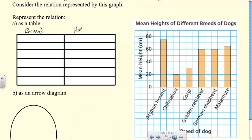And height here, because our association is an Afghan hound has a mean height of whatever the height is. We have to make sure that we put the breed first. So Afghan hound, I'll read that as AH, Chihuahua, Corgi, Golden Retriever, German Shepherd, and Malamute.